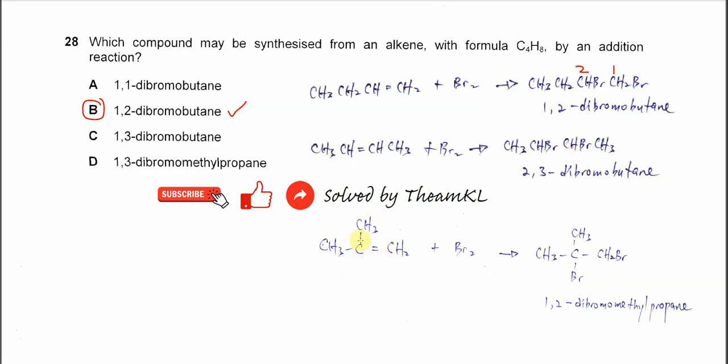Another possible alkene is methylpropene. The bromines will add to these two carbons, this and this carbon, to form this one. This one is 1,2-dibromo-2-methylpropane. First carbon, second carbon.